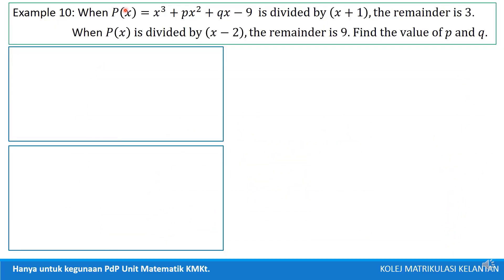Example 10. When P(x), x cube plus Px square plus Qx minus 9 is divided by x plus 1, the remainder is 3. When P(x) is divided by x minus 2, the remainder is 9. Find the value of P and Q.